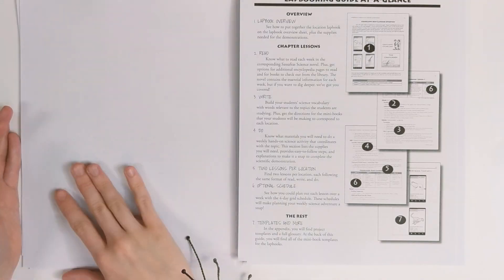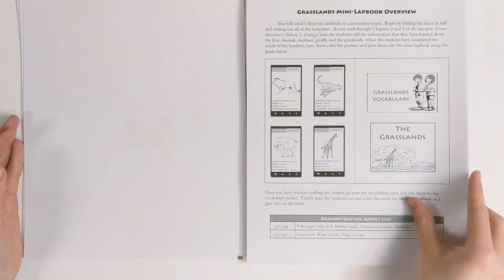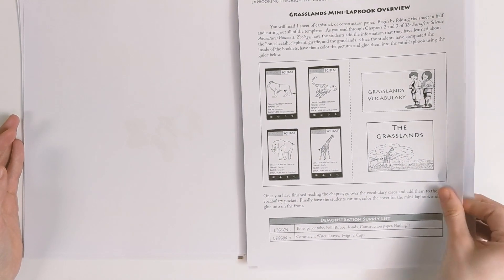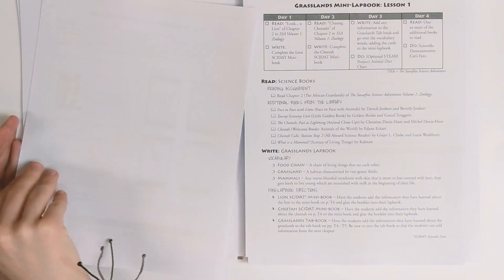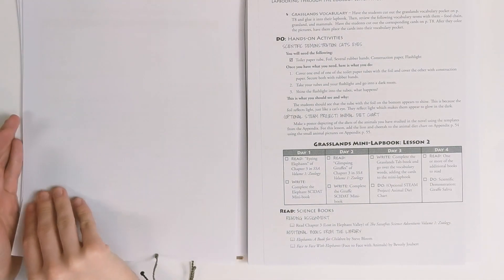This guide is a simple version of the Activity Guide, along with a set of templates for you to use to create a lapbook. You can see how to put these together on the Lap Book Overview Sheet, which is followed by the chapter lessons. Again, you'll have a read section, a write section, and a do section.